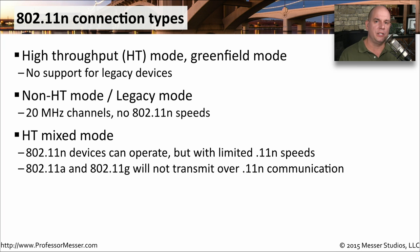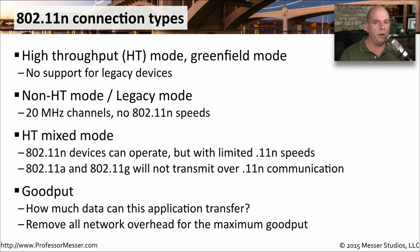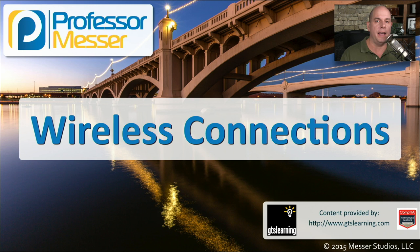You might also have an option inside your access point for high throughput mixed mode. In mixed mode, you're able to run 802.11n and 802.11b/g/n at the same time. Your N devices are not going to run at the full capabilities of N, and your b/g/n devices obviously won't run at N speeds either. But this does allow you to have all of those devices running on your network at the same time. With goodput, you are defining how fast the application can transfer the information — you're not worried about network mechanisms, only the maximum throughput for your application. When you look at throughput from an application level, we always refer to that as goodput.